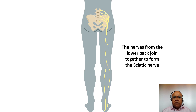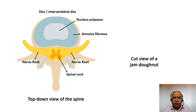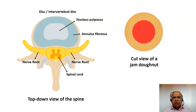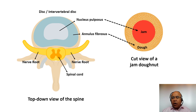The nerves from the back join together and form the sciatic nerve, which runs down the leg. That is why sciatica involves both back pain and leg pain together. The structure of the disc is very similar to a jam donut — the nucleus pulposus is like the jam in the center, and the annulus fibrosis is like the dough on the outside.